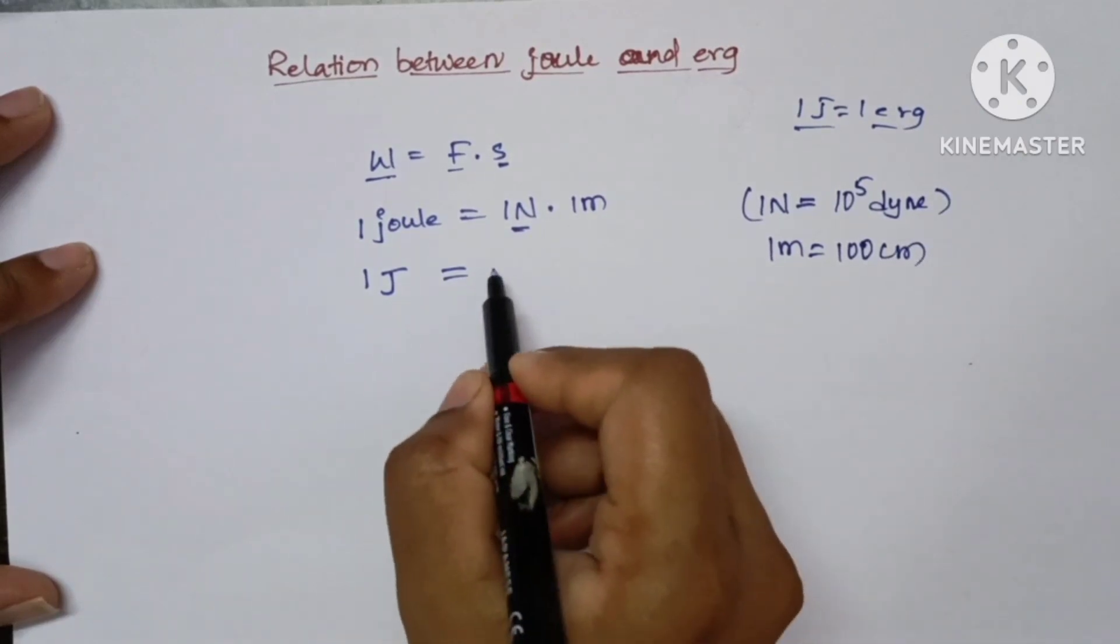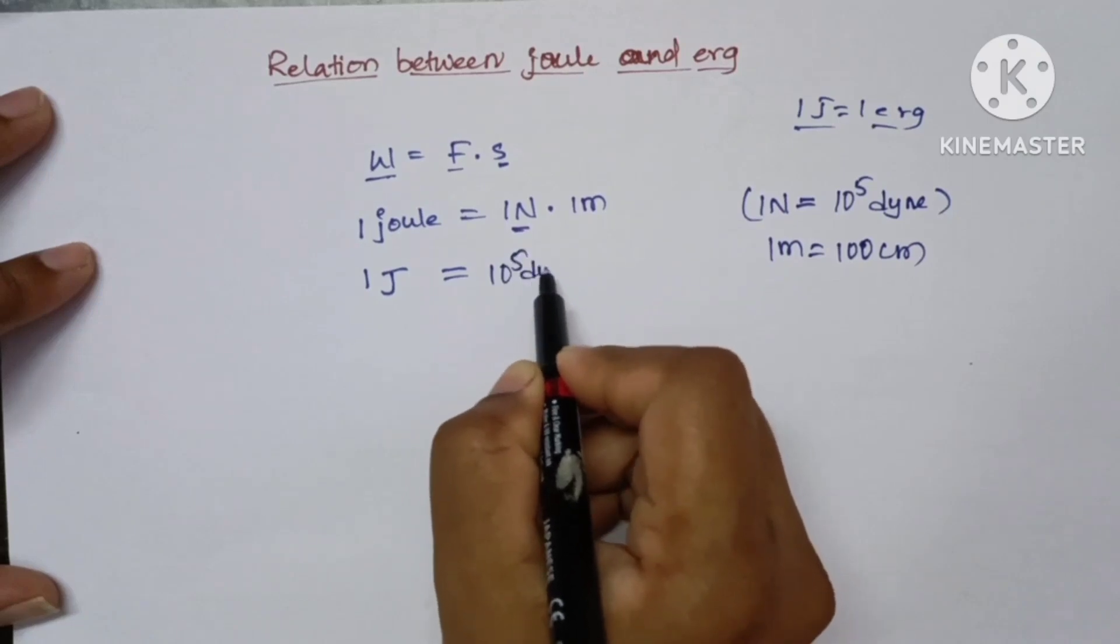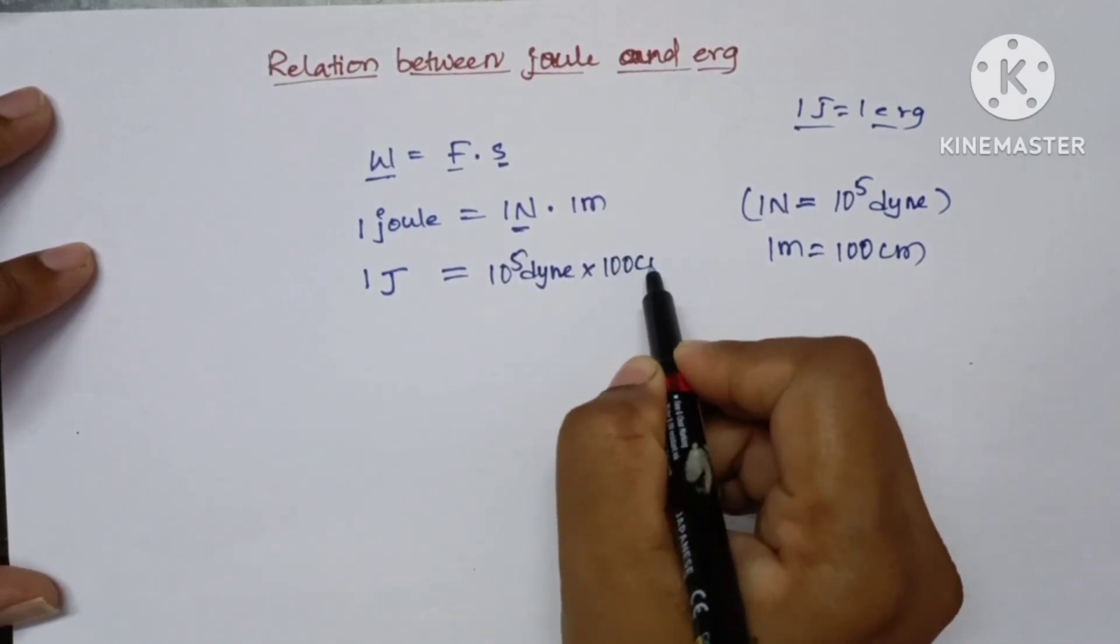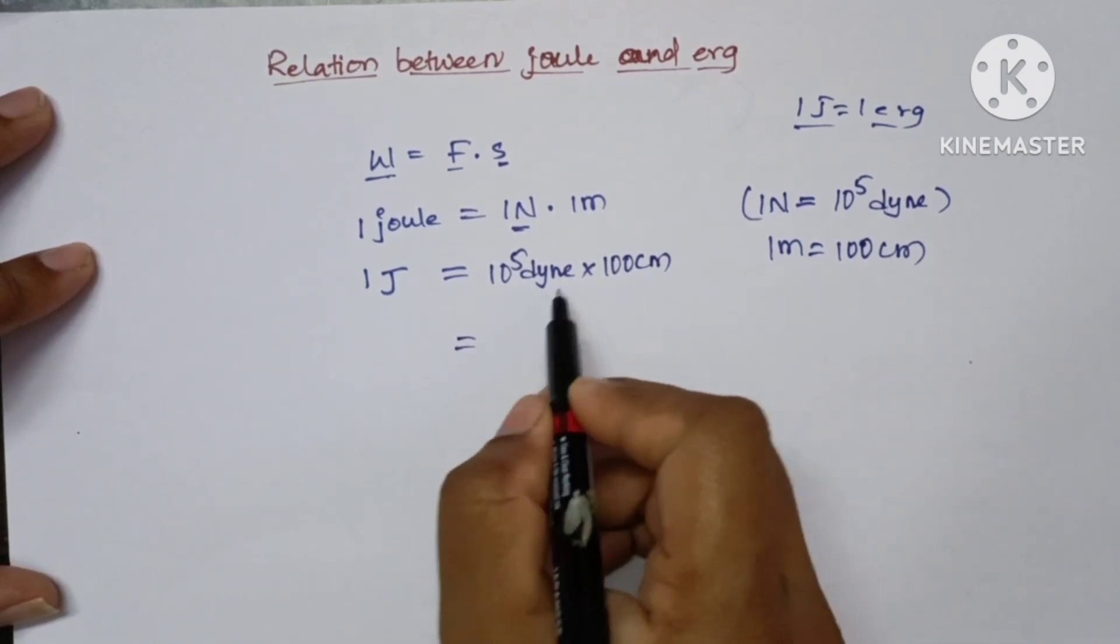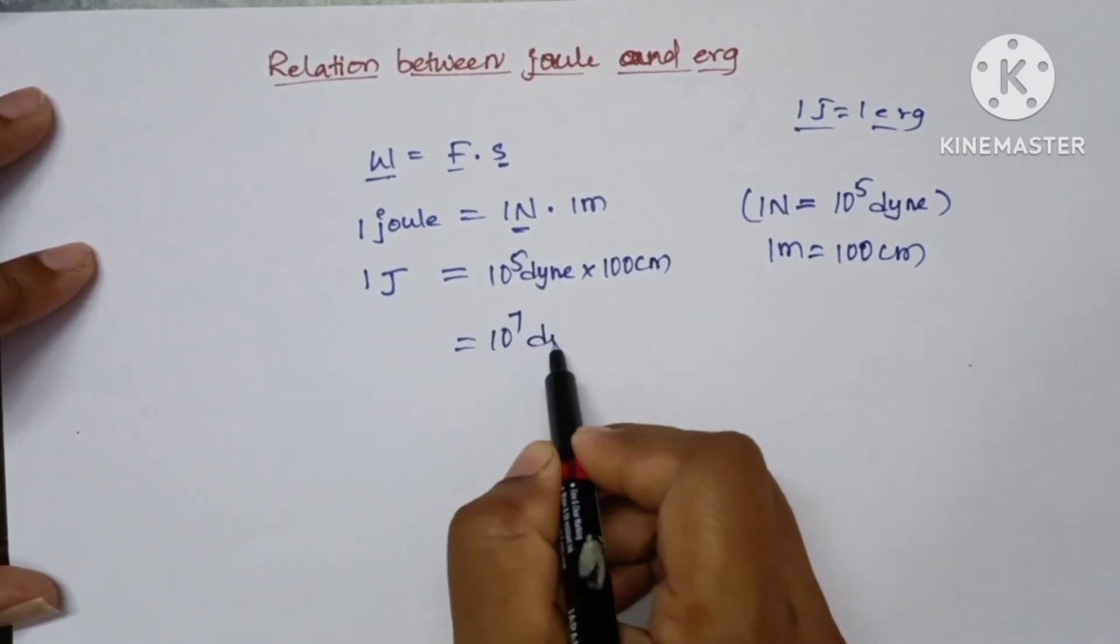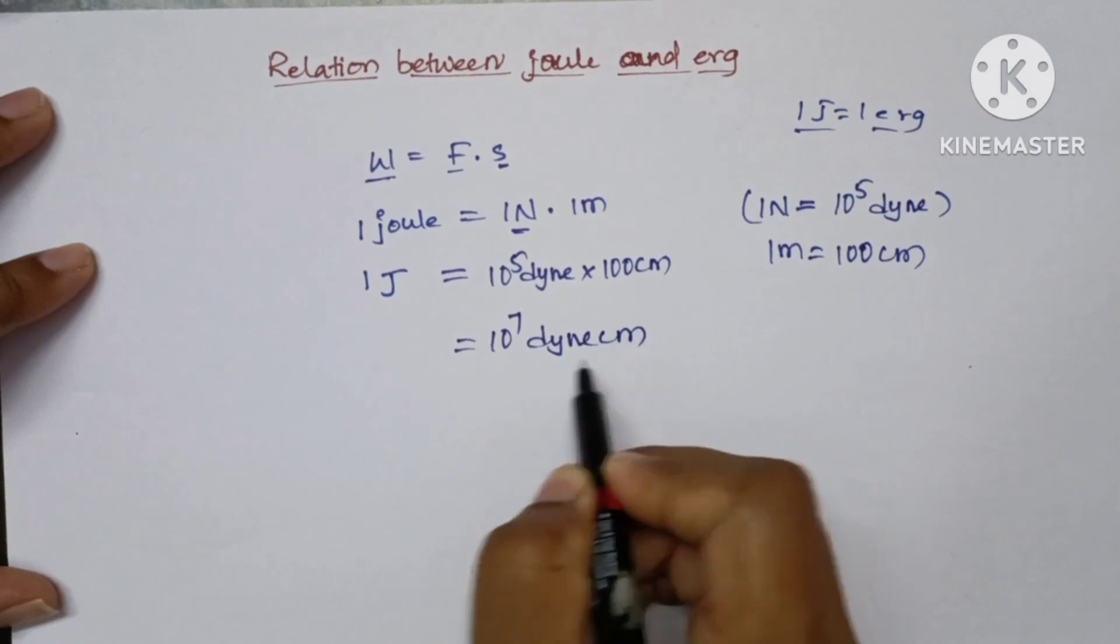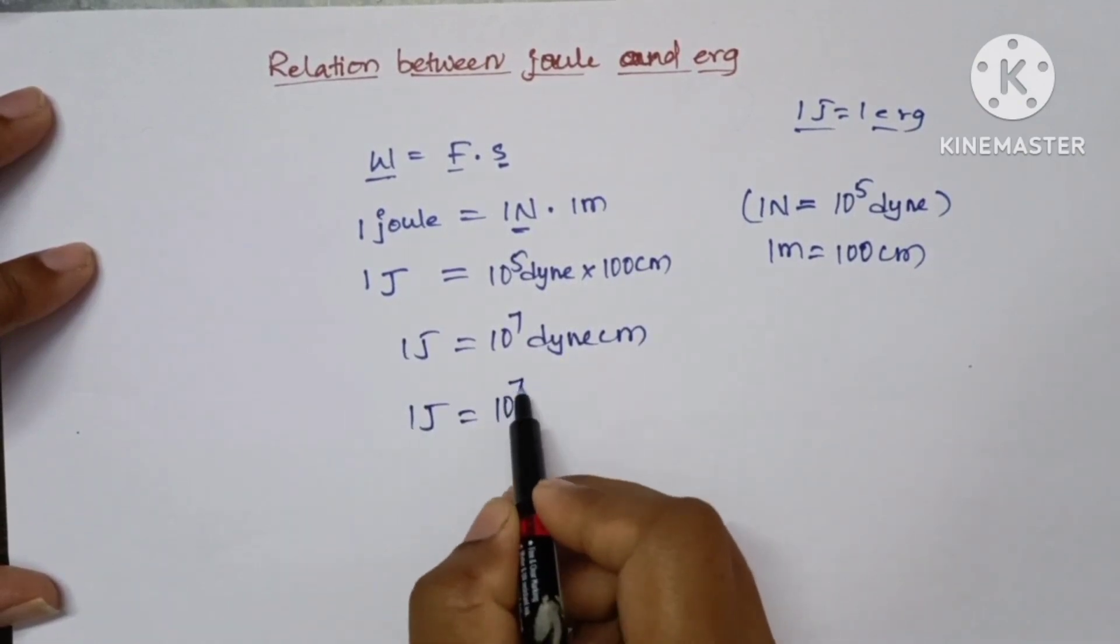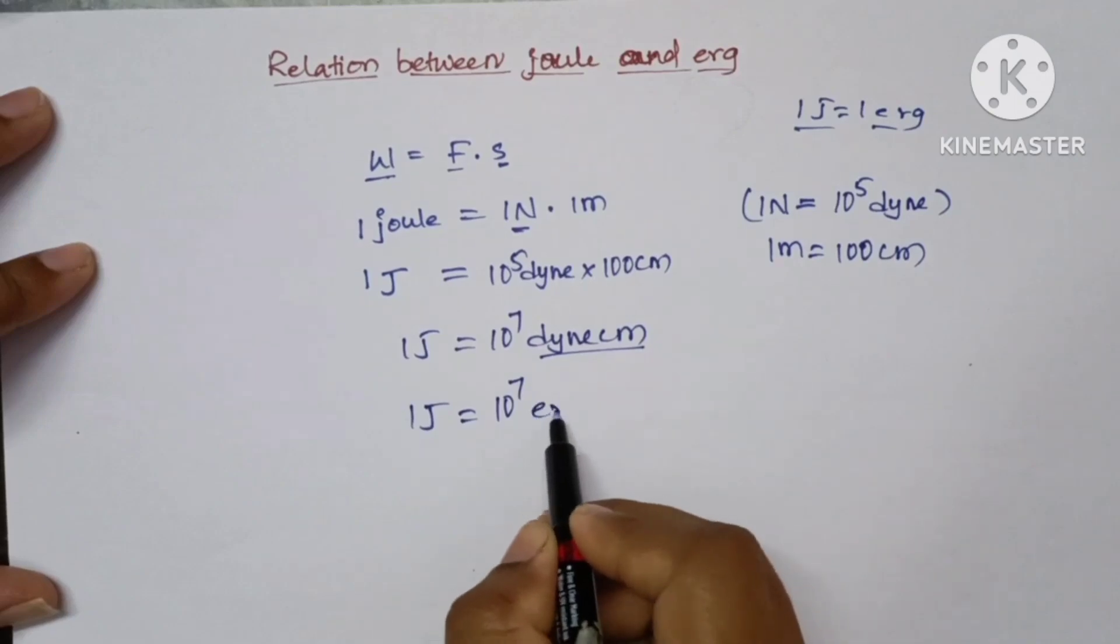So 10 to the power of 5 dyne into 100 centimeters, which equals 10 to the power of 7 dyne centimeter. So 1 joule is equal to 10 to the power of 7 dyne centimeter, which is nothing but erg.